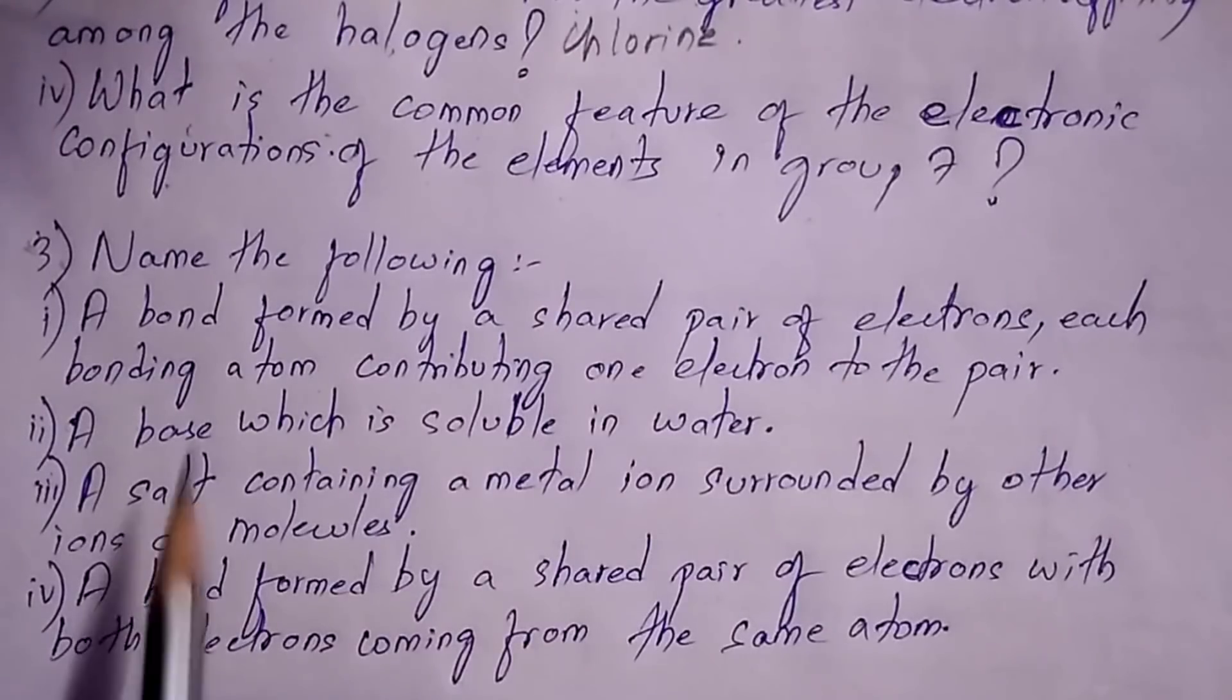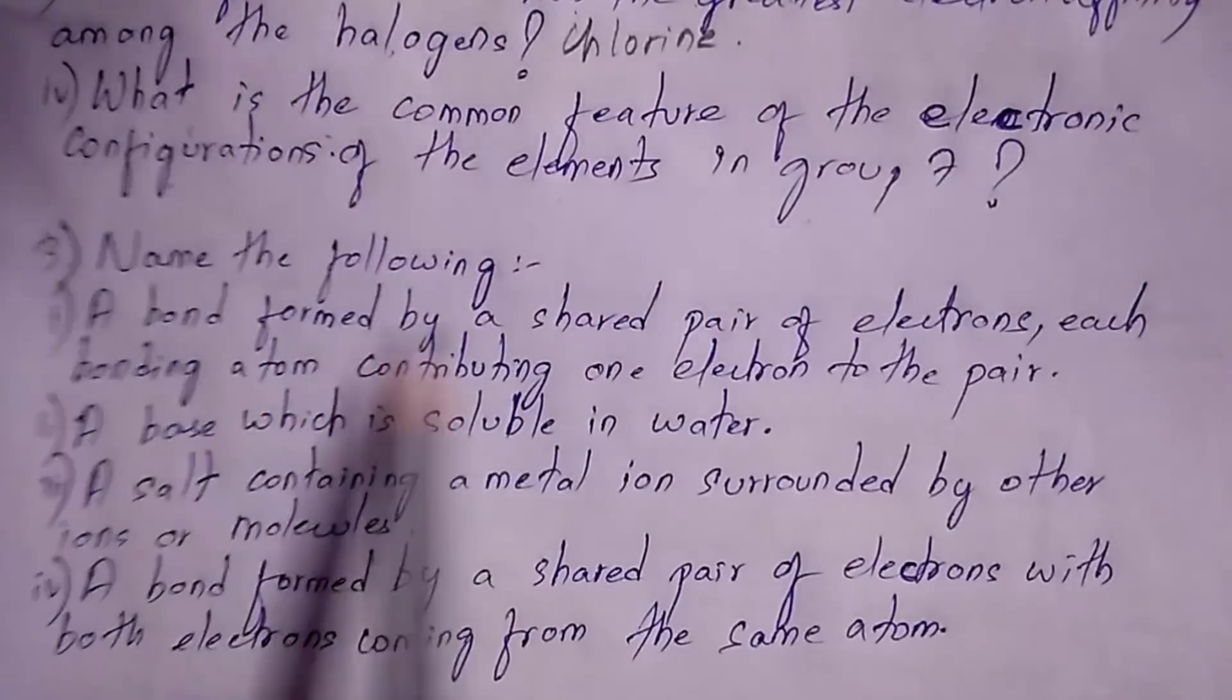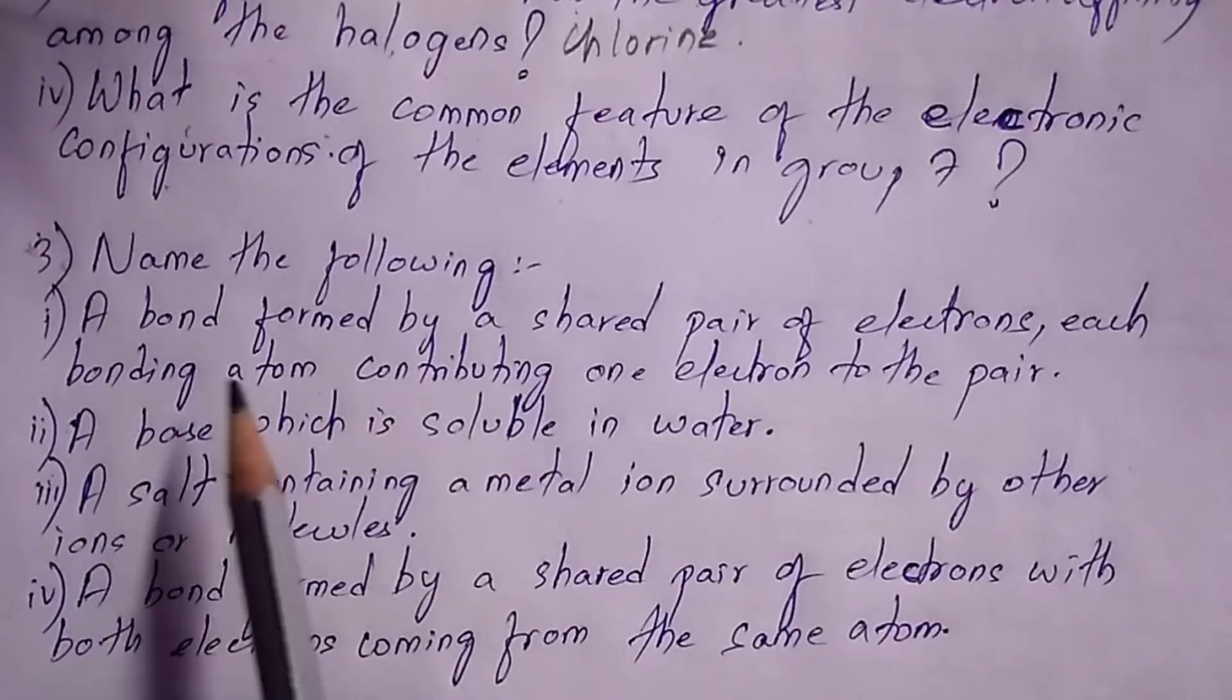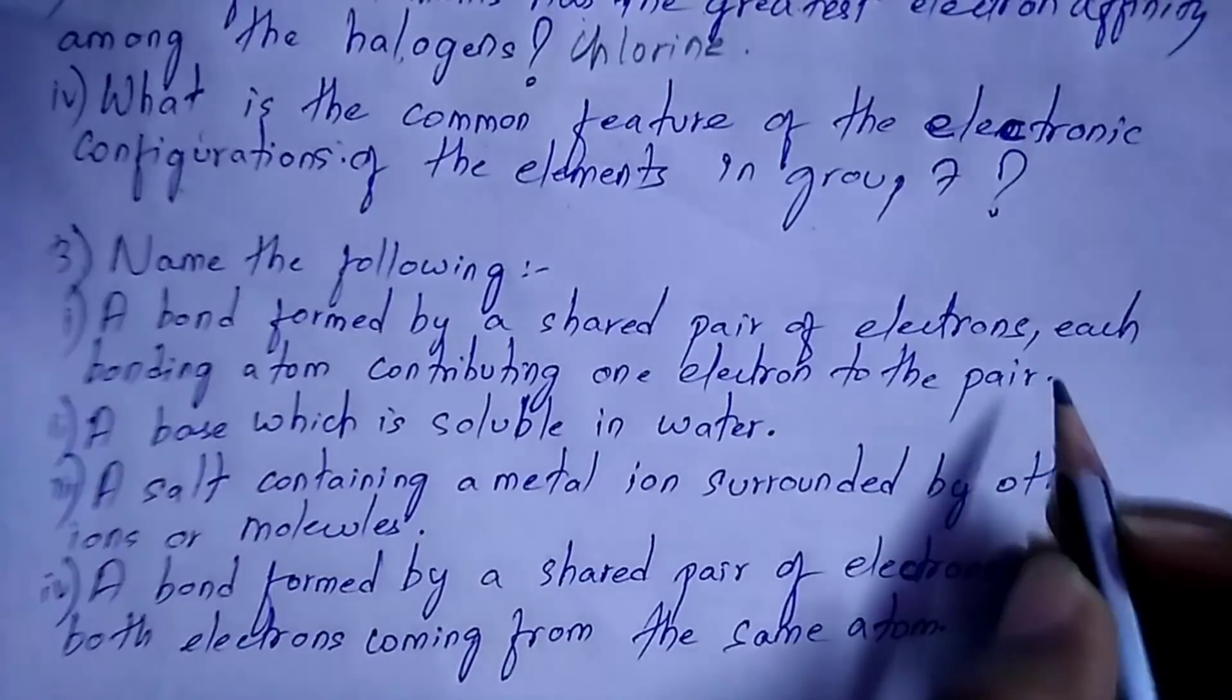Name the following: first question is a bond formed by a shared pair of electrons, each bonding atom contributing one electron to the pair. It is covalent bond.